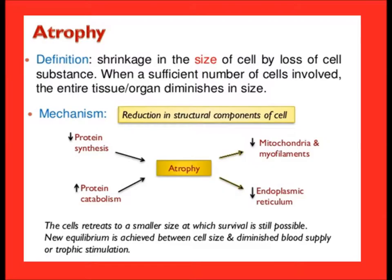Atrophy is defined as shrinkage in the size of a cell by loss of cell substance. When a sufficient number of cells are involved, the entire tissue or organ diminishes in size. The mechanism of atrophy includes decreased protein synthesis, increased protein metabolism or breakdown, decreased mitochondria and myofilaments, and decreased endoplasmic reticulum.